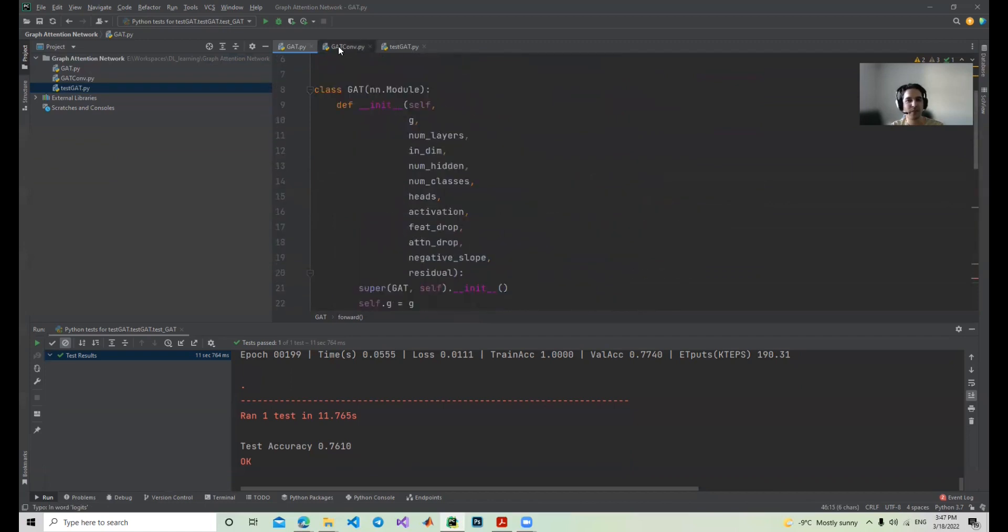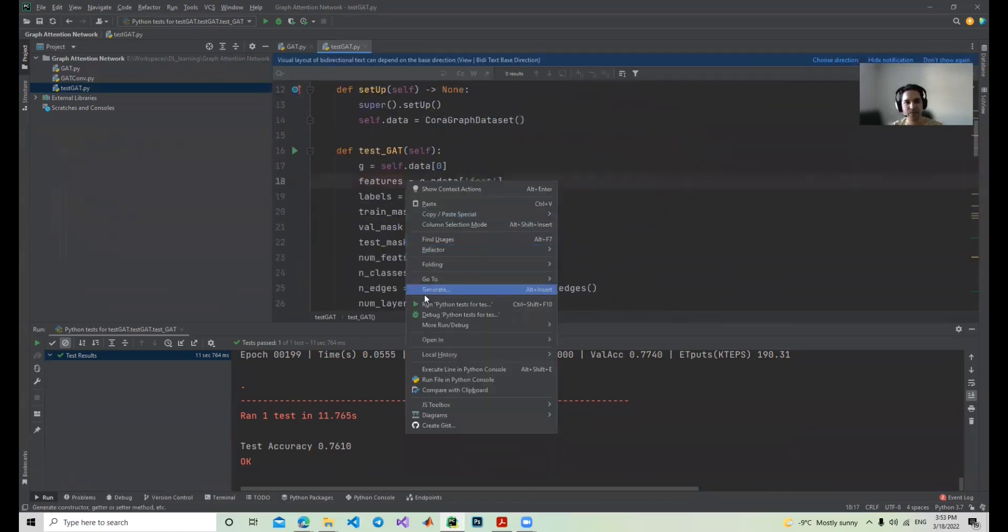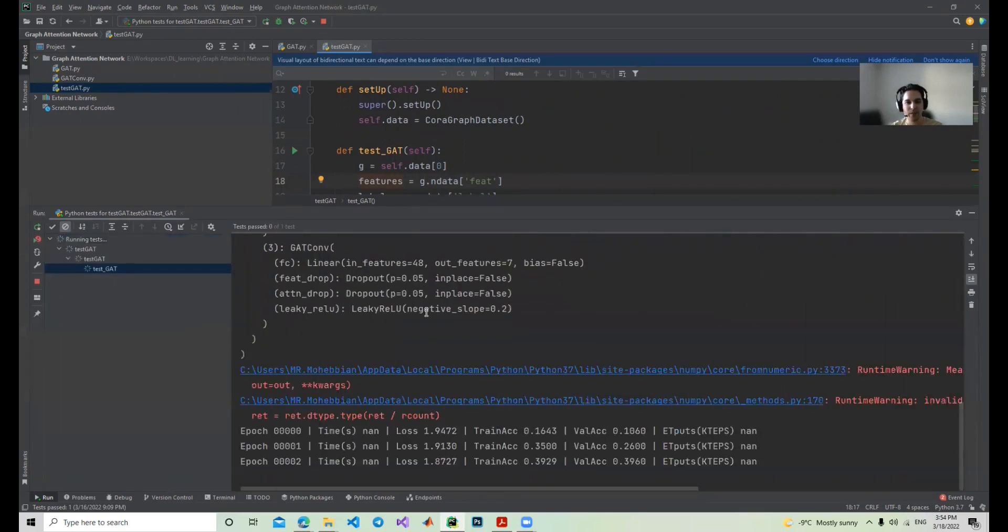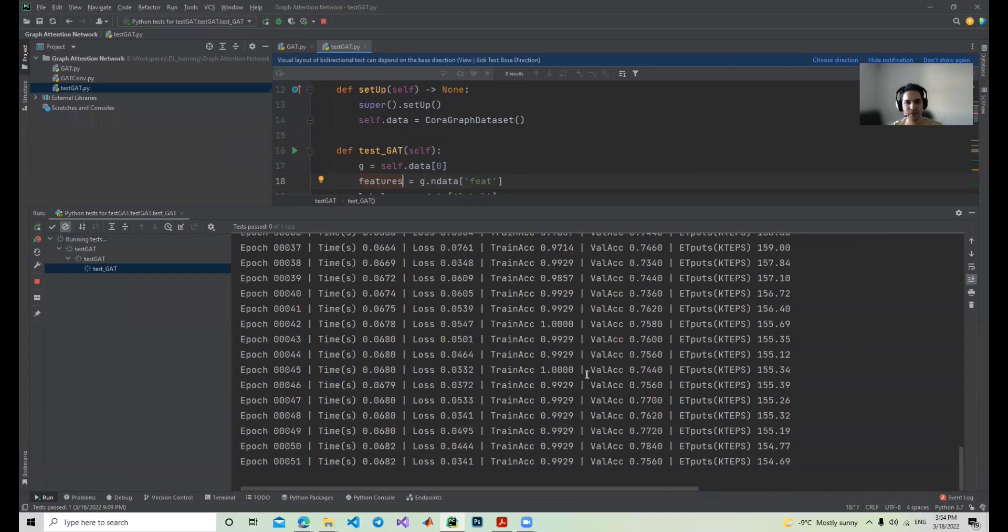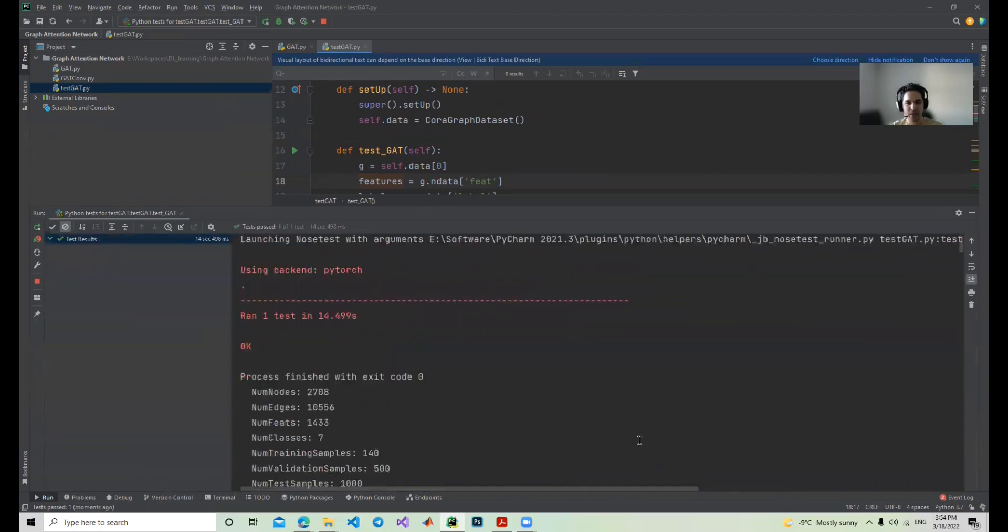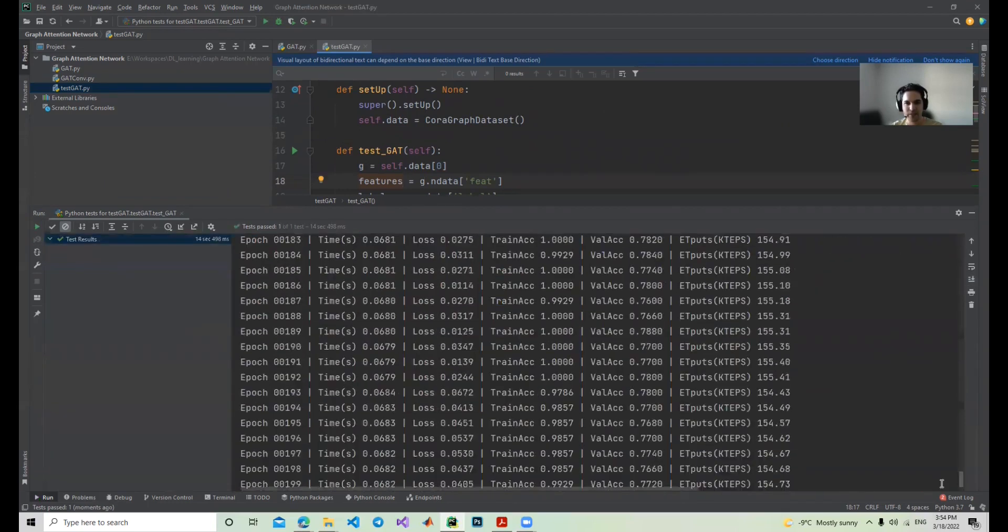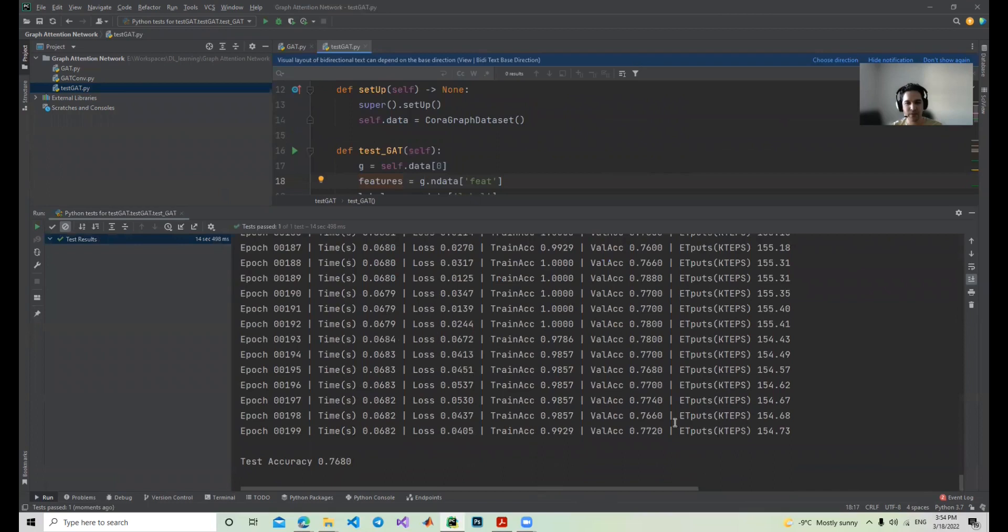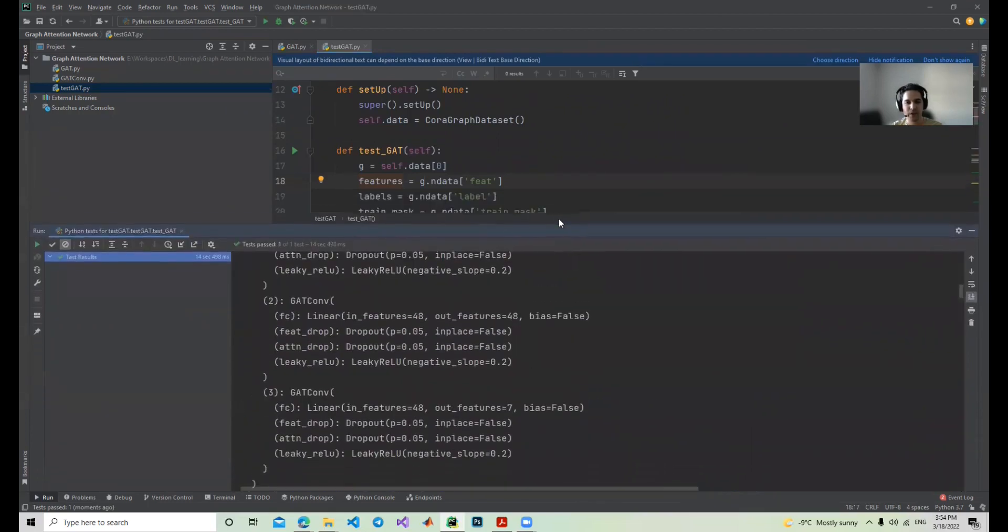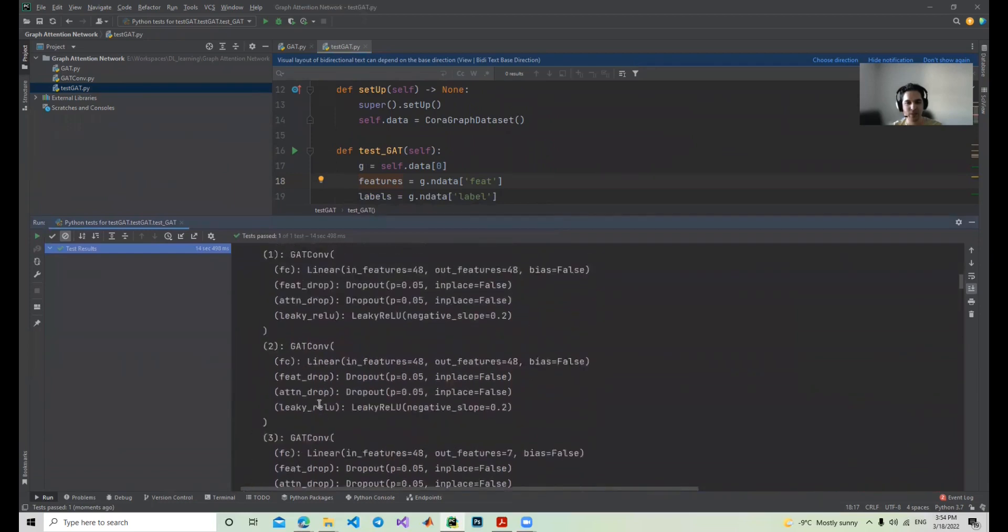So if I run this test, it will load the data, load the model, and start training. You see the training accuracy, now it's getting 99, and the test accuracy, the validation accuracy is getting 76. I hope that the test accuracy would be similar to the validation accuracy. The test accuracy is showing at the end, 76%, which is good. We could train the Cora dataset by 76% accuracy.